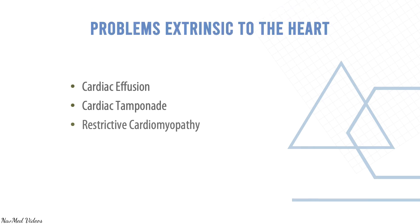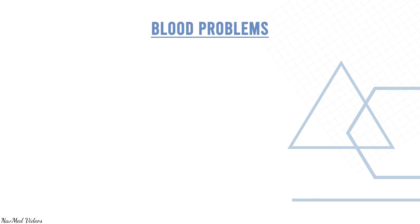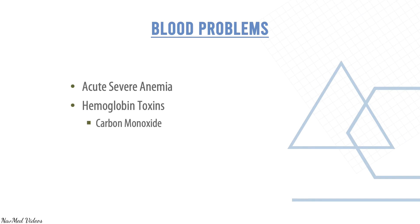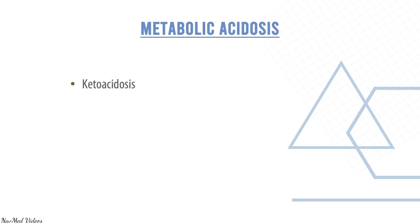Problems extrinsic to the heart include pericardial effusion, cardiac tamponade, and restrictive cardiomyopathy. Blood problems include severe anemia or hemoglobin toxins like carbon monoxide and methemoglobinemia. Metabolic causes include ketoacidosis, lactic acidosis, and salicylates.